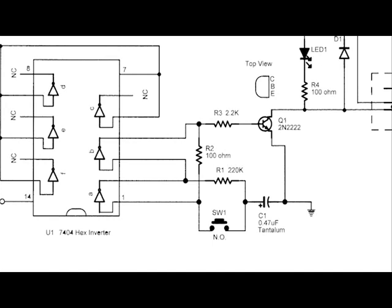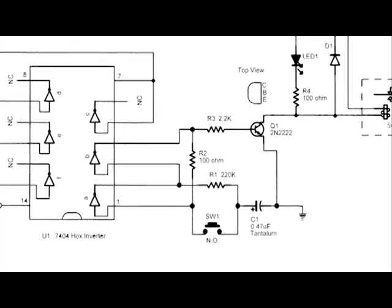Momentarily depressing SW1 again will reverse the output condition by applying a low to pin 1, which causes our output, pin 4, to go low. C1 now charges through R1, and we are back at the power on state.